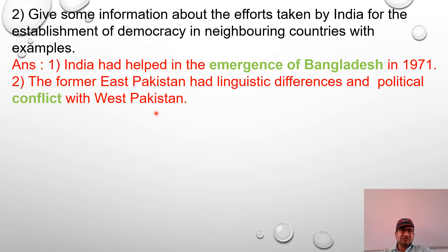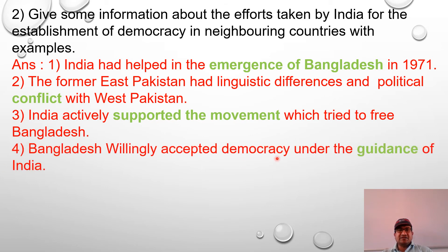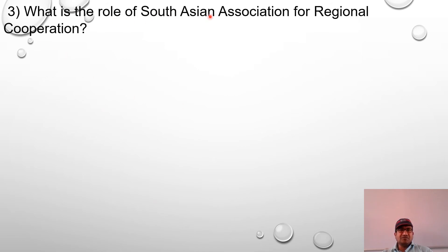Next: Give some information about the efforts taken by India for the establishment of democracy in neighboring countries. When India became independent in 1947, it was divided into India and Pakistan. Former East Pakistan had linguistic and political differences with West Pakistan, and India actively supported the movement to free Bangladesh. Bangladesh willingly accepted democracy under the guidance of India. India has also helped Nepal and Afghanistan in establishing democracy, peace, security, and stability.